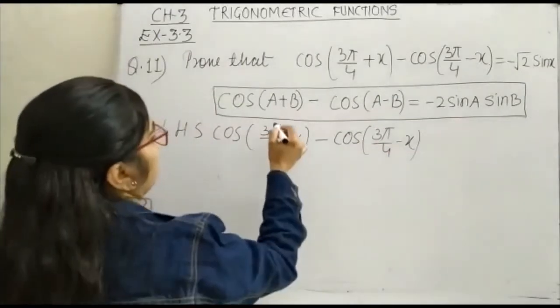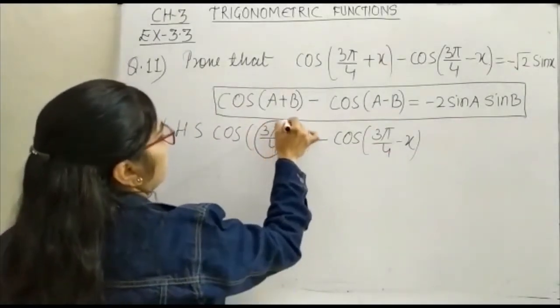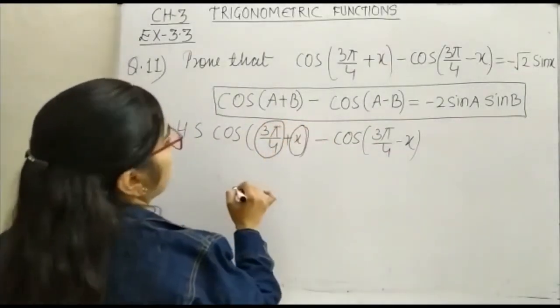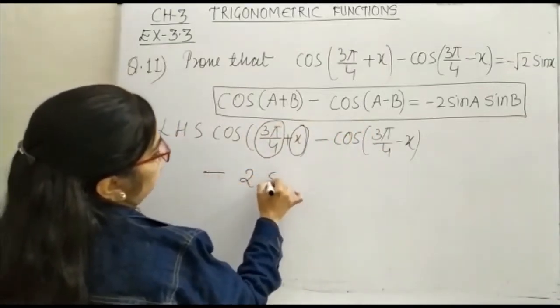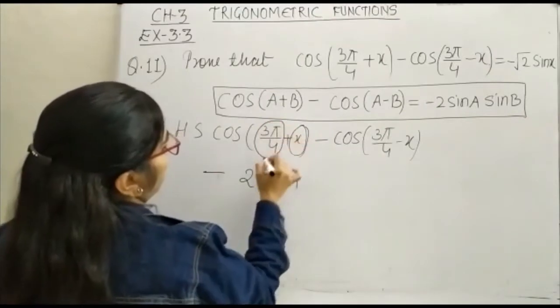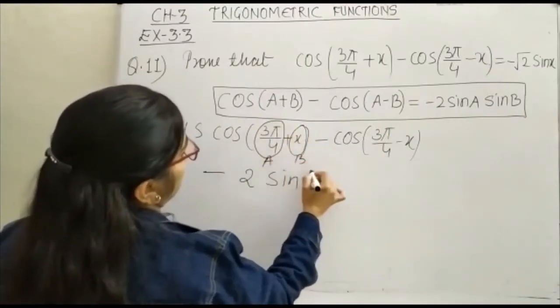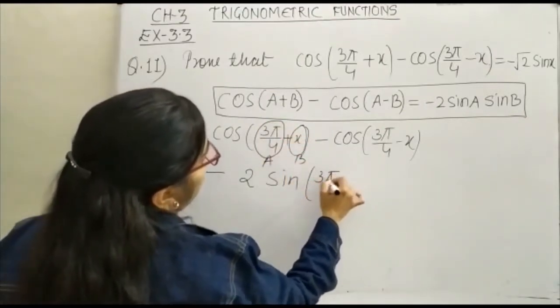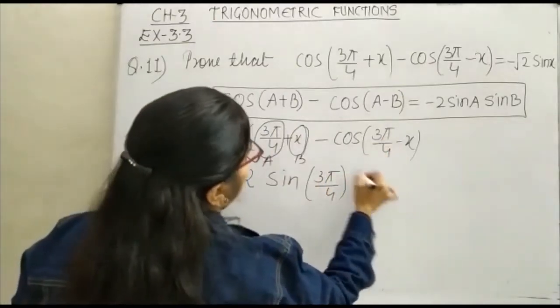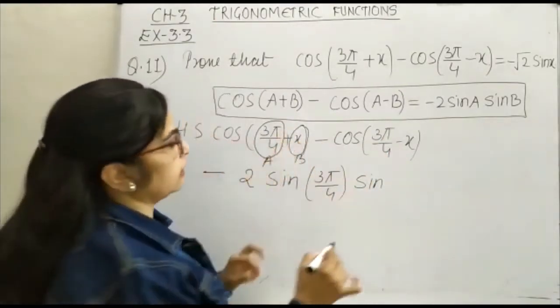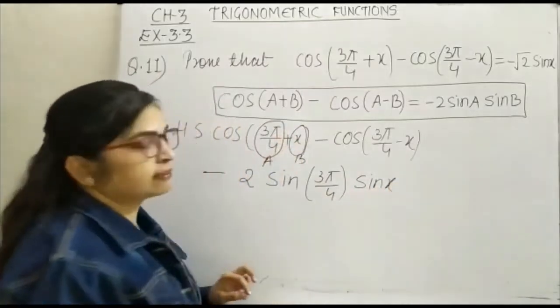So this is our A, this is our A and this is our B. According to the formula it will be minus 2 sin, this is the value of A and this is B, so this becomes 3π/4 and sin, your value of B is x, so it will be your x.